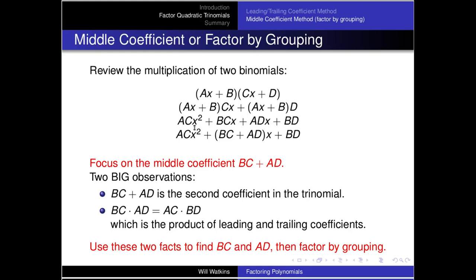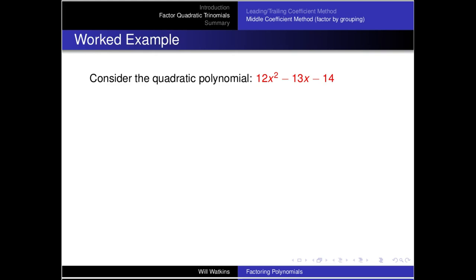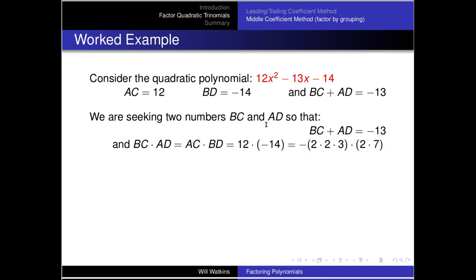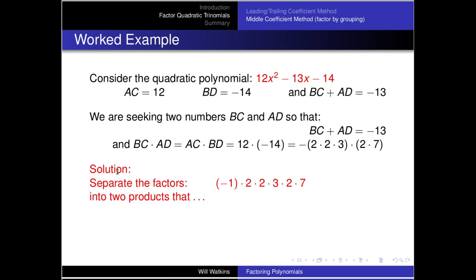We'll use those two facts to find bc and ad, then factor by grouping. For this quadratic polynomial, we know what ac is, what bd is, and what their sum is. We're seeking bc and ad such that bc + ad = −13, and their product equals the first term times the last term of the polynomial. We separate the factors of that product — noting the minus sign — and identify the relevant factor combinations.